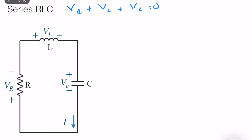What is V_R? It is equal to R times I. What is V_L? We express it as L times dI/dt, keeping in mind that the current is also the current of the capacitor. Plus V_C equals V, which equals zero.